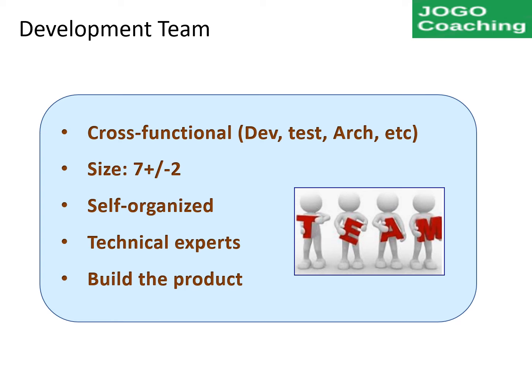In summary, PO will decide what is needed and why it's needed. Scrum Master will guide on the Scrum process and address the blockers. Development team will focus on how to implement the solution for the customers.